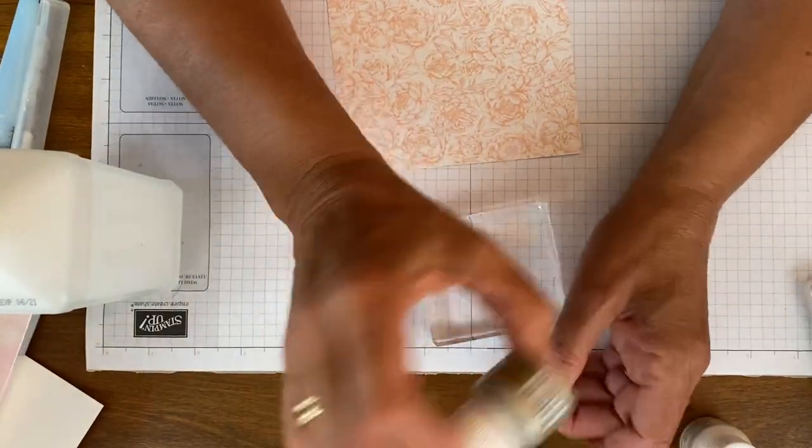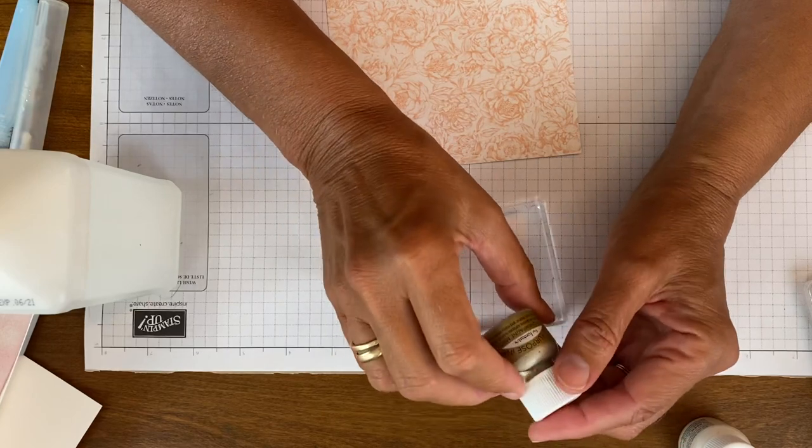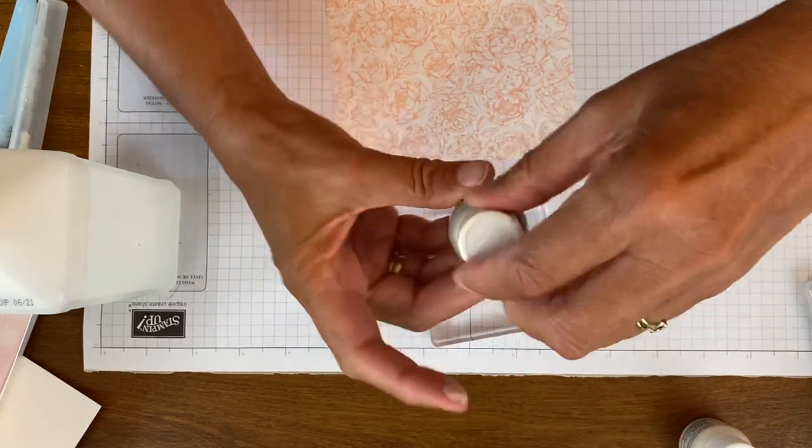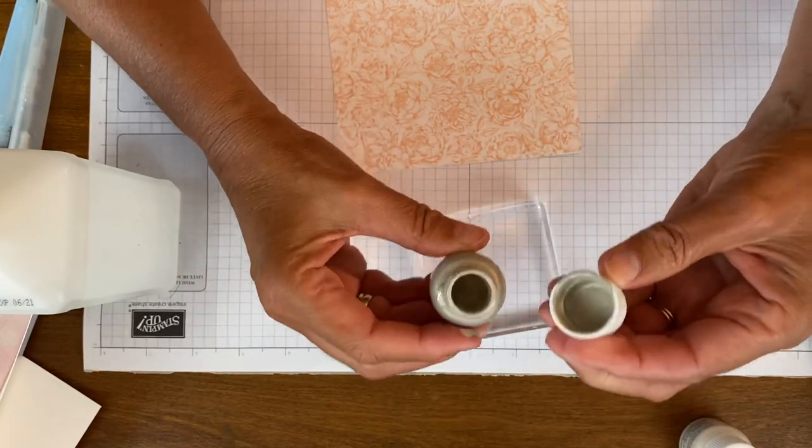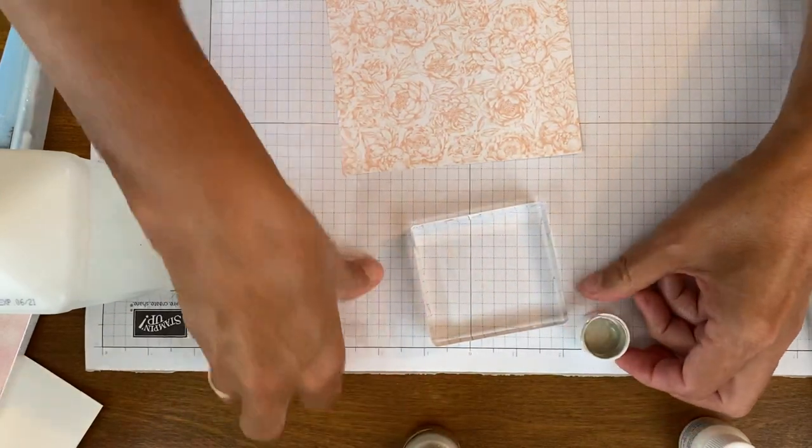You can hear the little ball in here, the little rattle that will keep it mixed up. This is Champagne Mist and I obviously didn't have this closed very well, did I? Now I have a choice. Look at that.